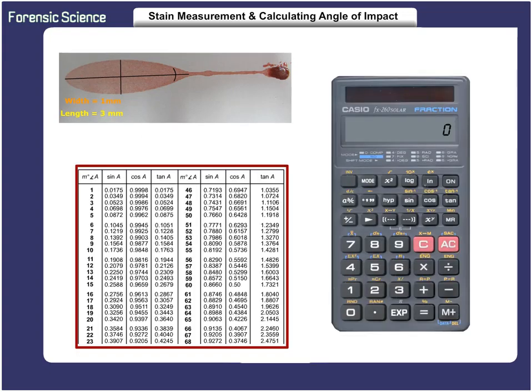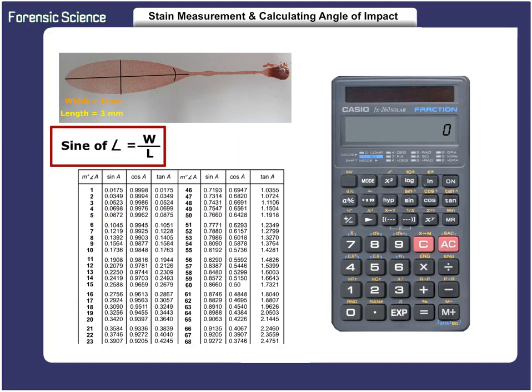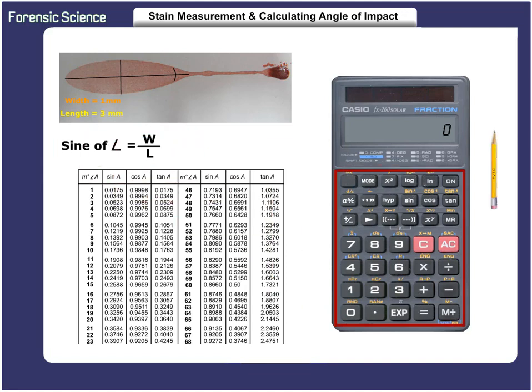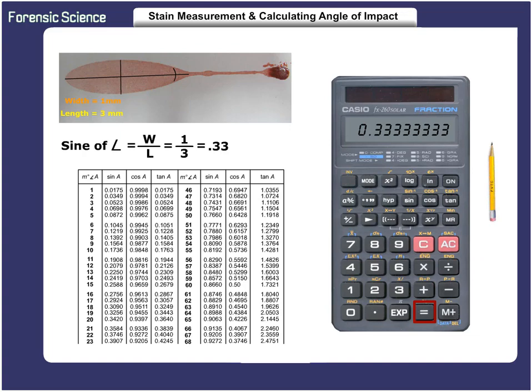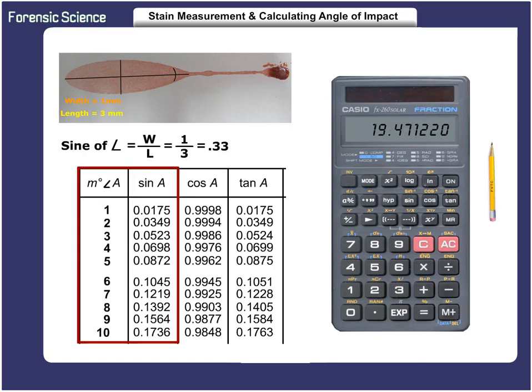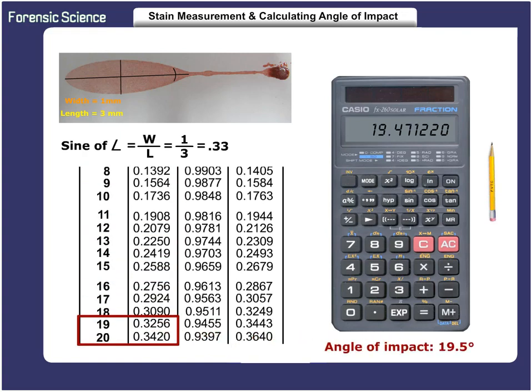Now we will use the trigonometric table to determine the angle of impact. Use the formula previously mentioned: the sine of the angle equals the width divided by the length. On your calculator, enter the width of 1 millimeter and then divide that by 3 millimeters — the length. This will equal 0.33, which is the sine of the angle. Now go to the trigonometric table and find 0.33, which is between the 19 and 20 degree angle of impact. This is how to measure stains and calculate the angle of impact using a trigonometric table.